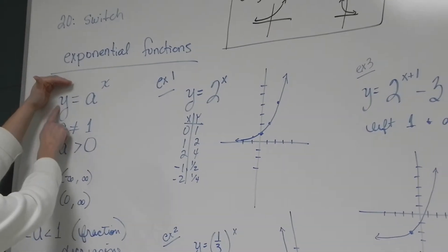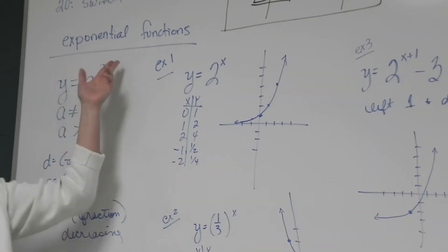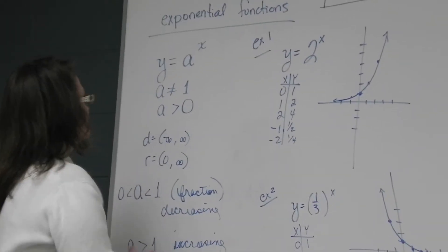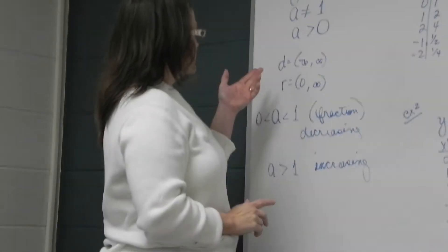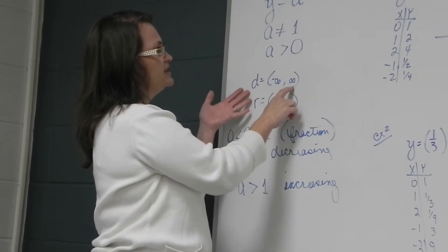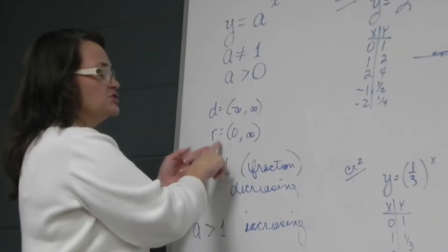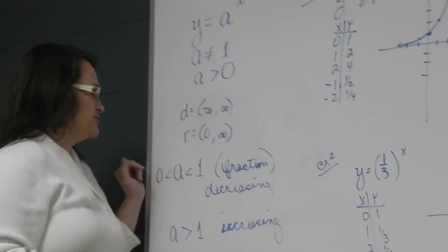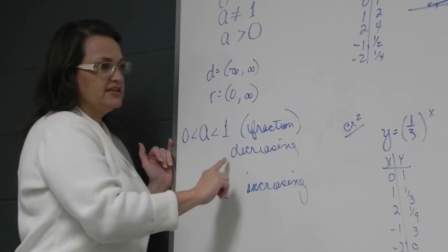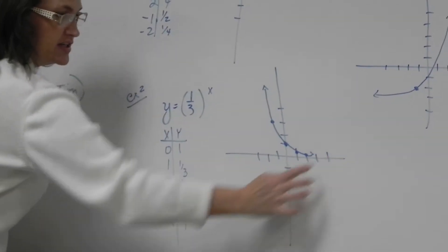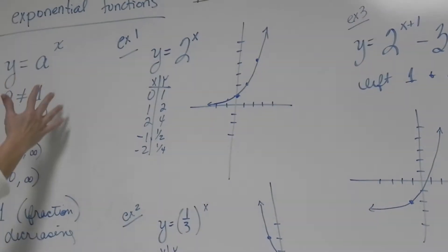So exponential functions would be of the form y or f(x) equals some base to a power. This base cannot be 1 because 1 to any power would just be 1, you get a flat line. And it has to be greater than 0, we can't have a negative base there. When you graph this, the domain of an exponential function is going to be negative infinity to positive infinity. You can plug in anything for the x value. And the range, the y values, will always come out 0 or above, only positive, 0 not included. If that base is a fraction between 0 and 1, you will get a decreasing function. It comes downhill like this, sample 2, you get a decreasing function. If that number is greater than 1, you get an increasing function like this one.